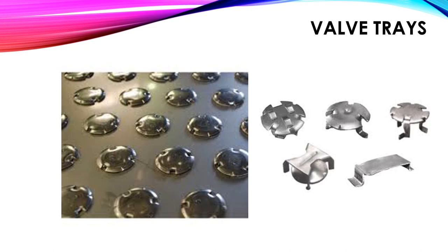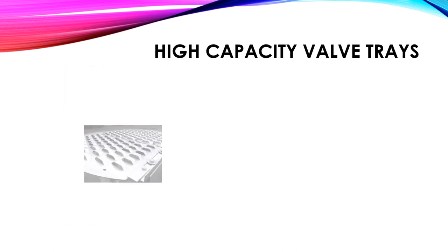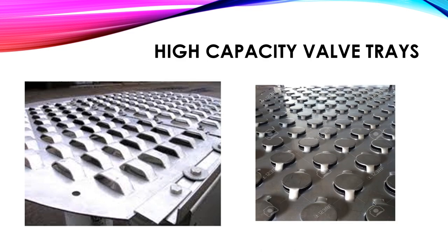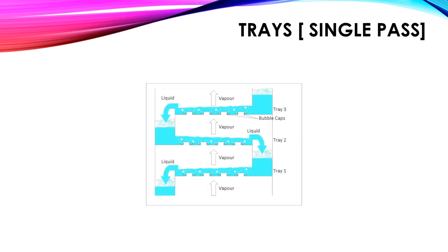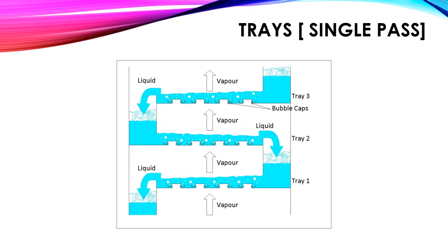These are different types of valve trays used in distillation columns. These are high capacity valve trays. Trays can be arranged in different passes — single pass or multi-pass. This figure shows a single pass arrangement of a valve tray.